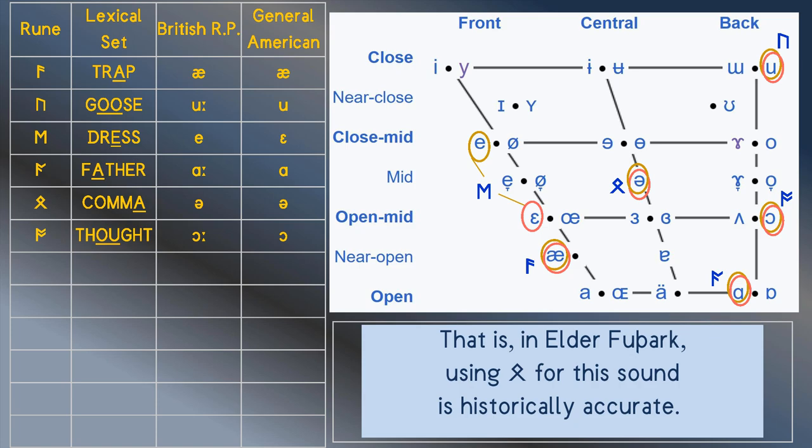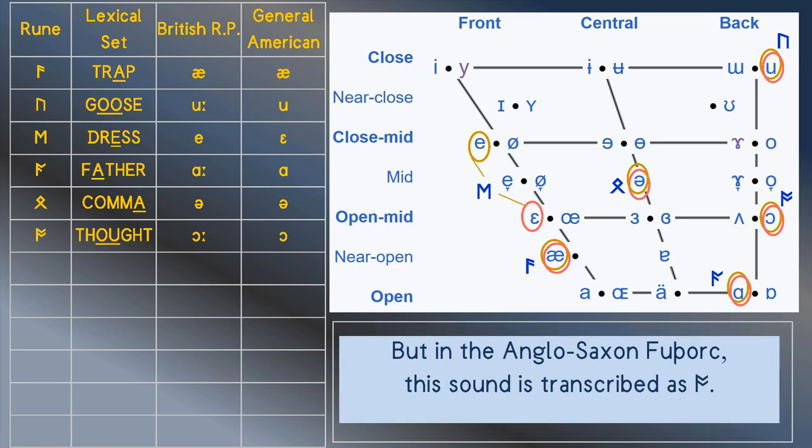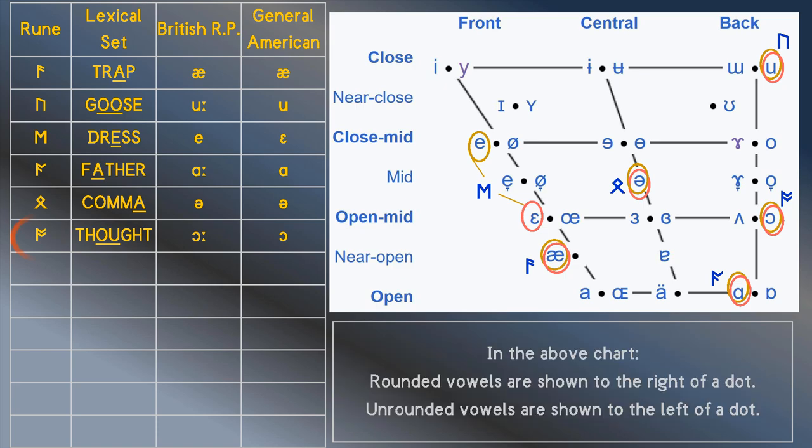We're using the Anglo-Saxon footwork. And to the Anglo-Saxons, a rounded back vowel was represented by Orse, not Ethel. Consequently, Orse is the logical choice for the thought vowel.